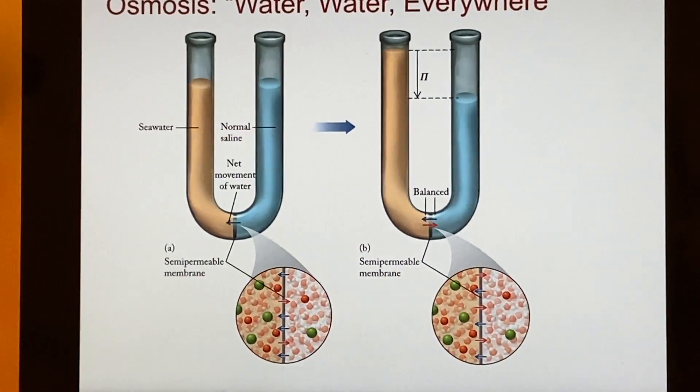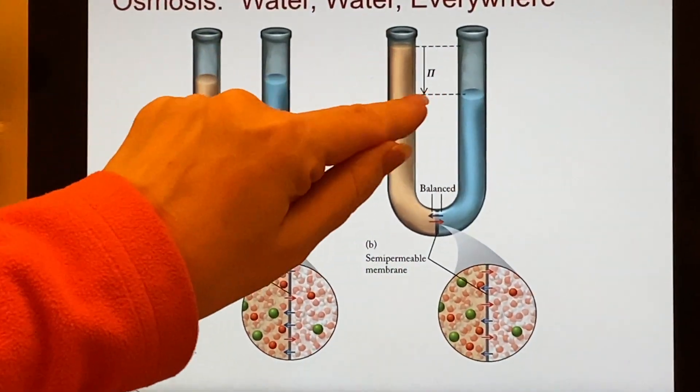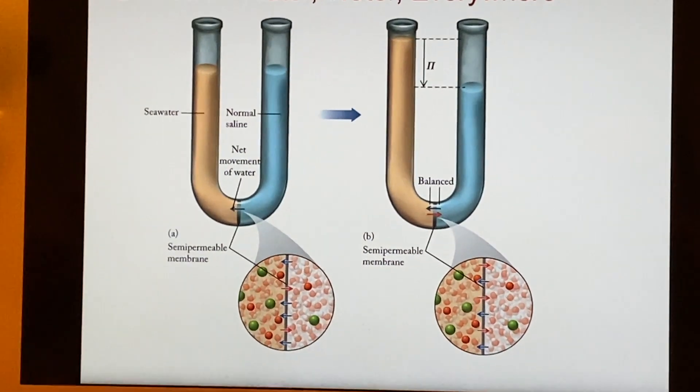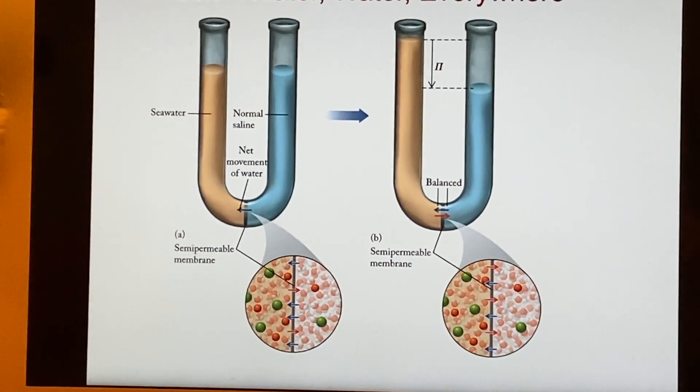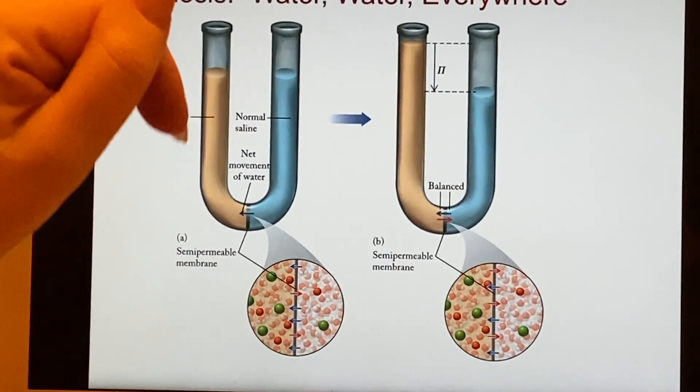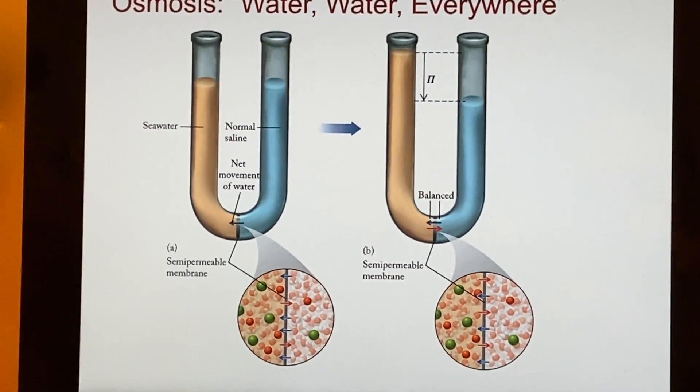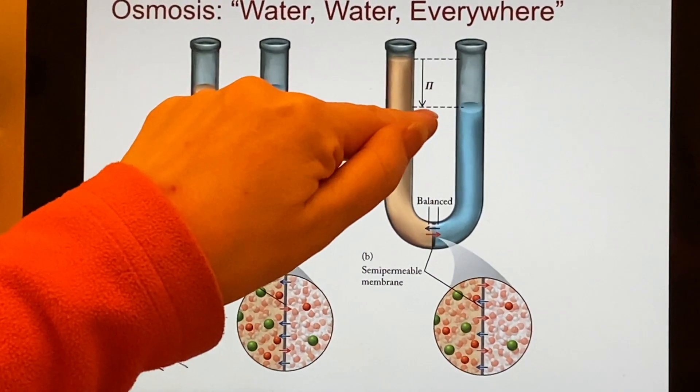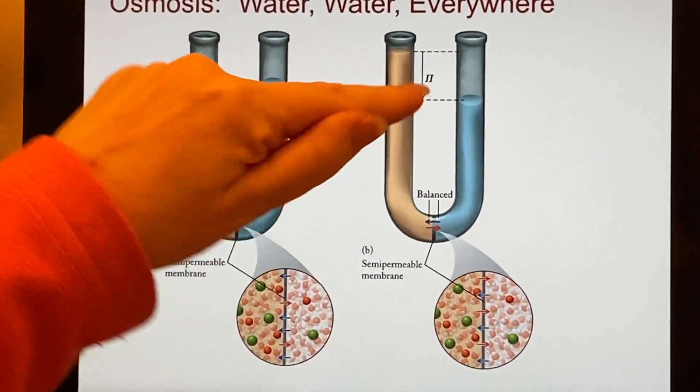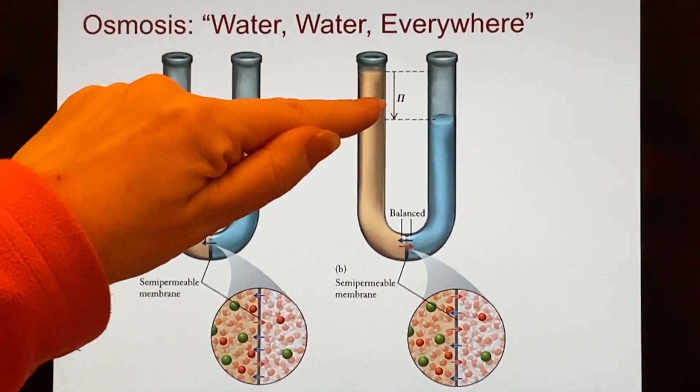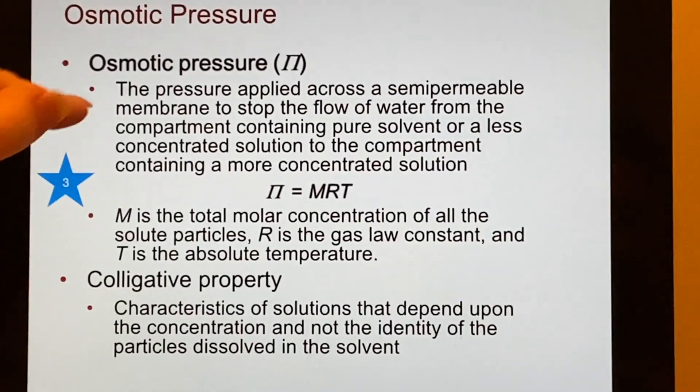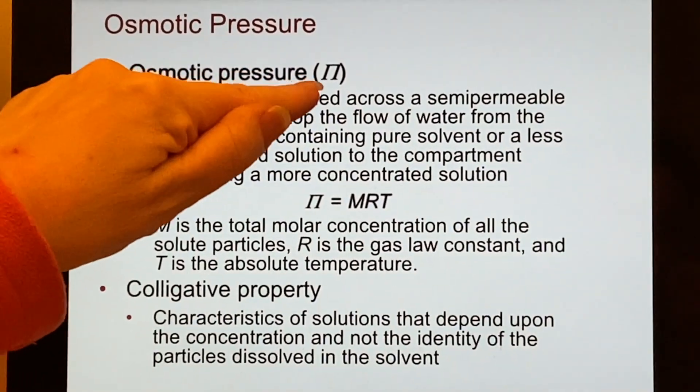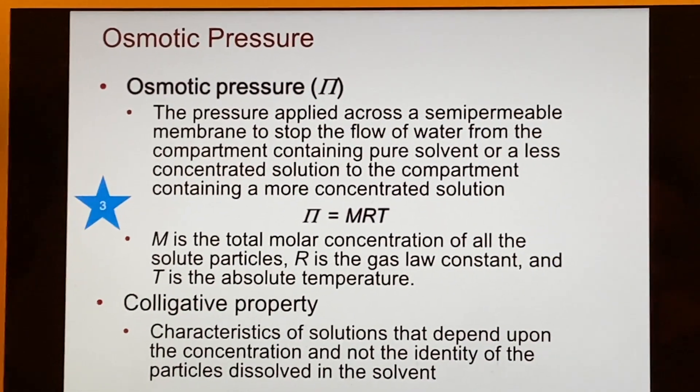When you have that, that amount of liquid has a mass and it's pressing down because of gravity. You can change this into an amount of pressure, and we use the Greek capital letter π to indicate that pressure. So osmotic pressure, we use capital π to describe it.